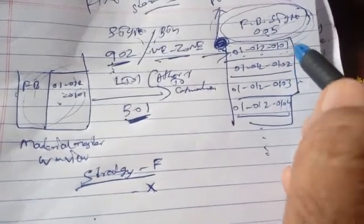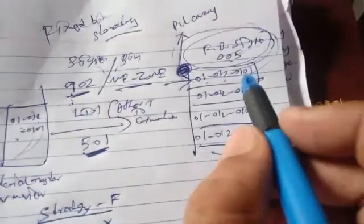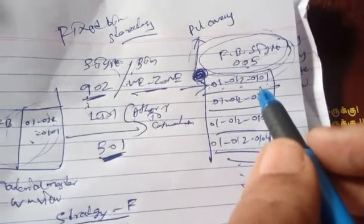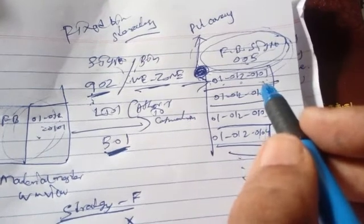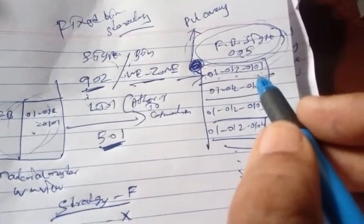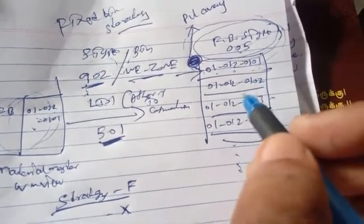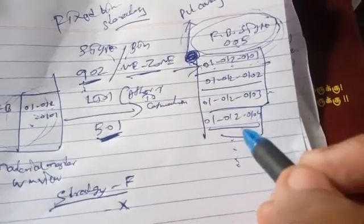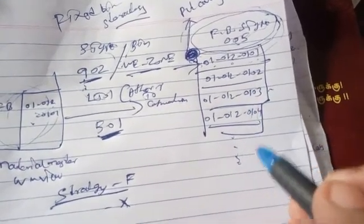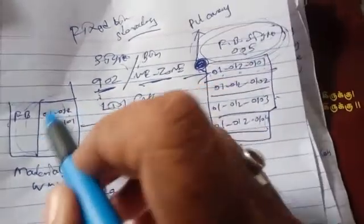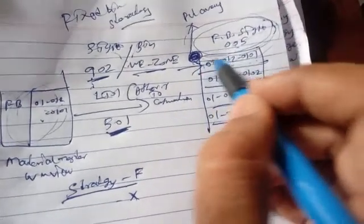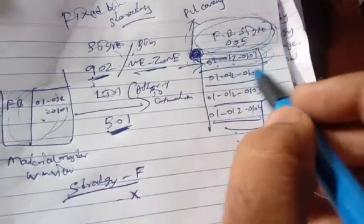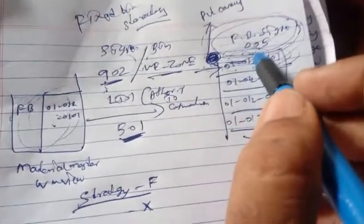This picture represents the sequence of storage bins. The sequence of bins is defined in transaction LS10, with an increment of one — so the bins go 010101, 010102, 010103, 010104, 010105, and so on. Based on the fixed bin defined in the material master, the material will be placed in that specific fixed bin within the fixed bin storage type.